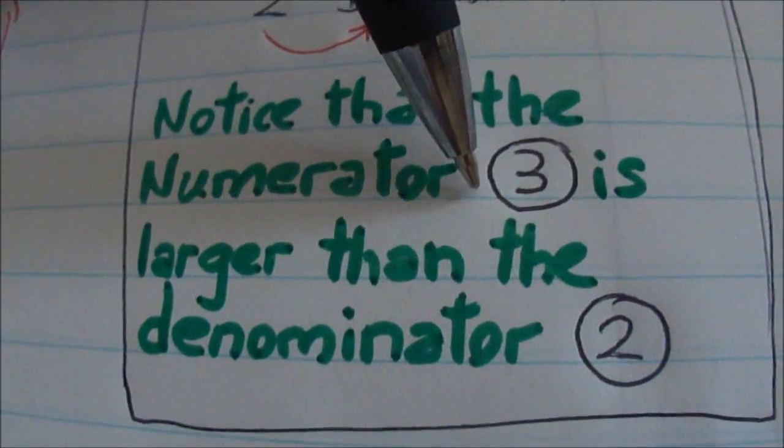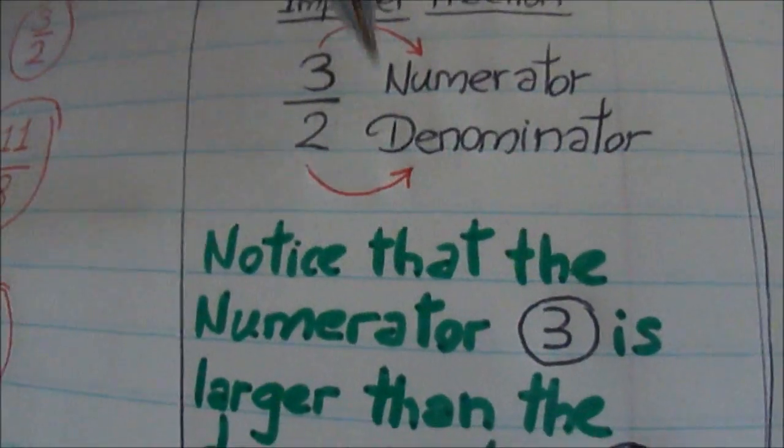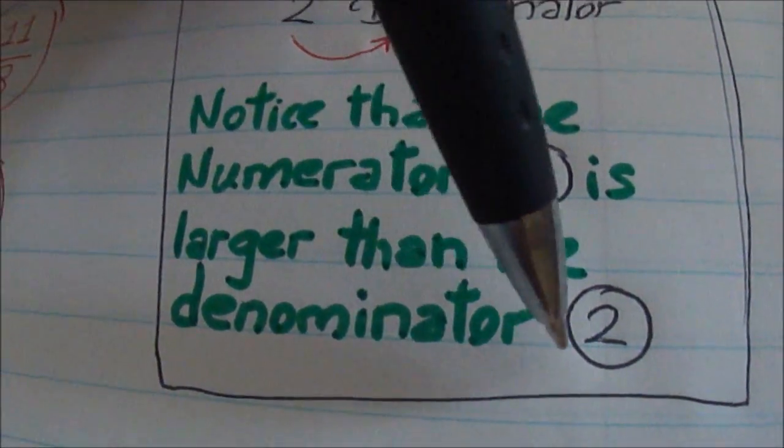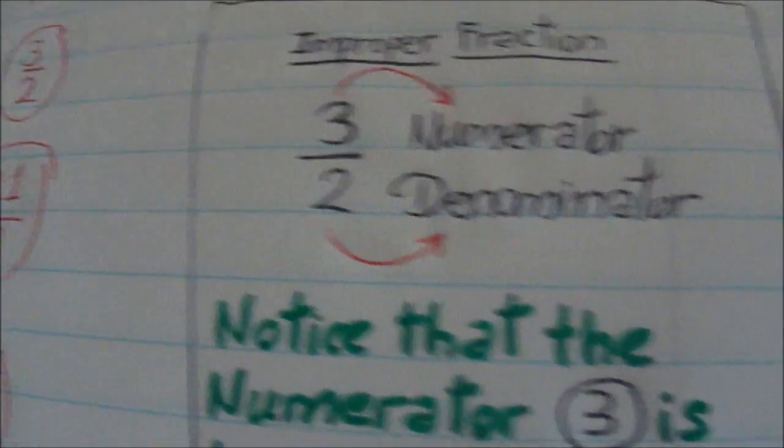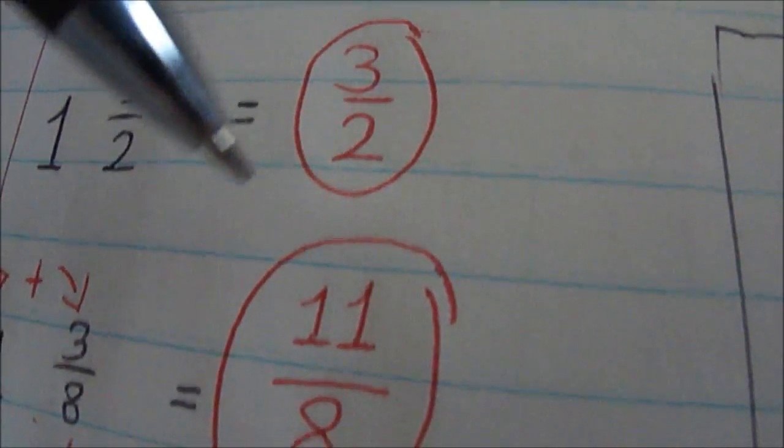Notice that the 3 in this case, the numerator 3 in this case, is larger than the denominator 2 in this case. So that's an improper fraction. 3 over 2, improper fraction.